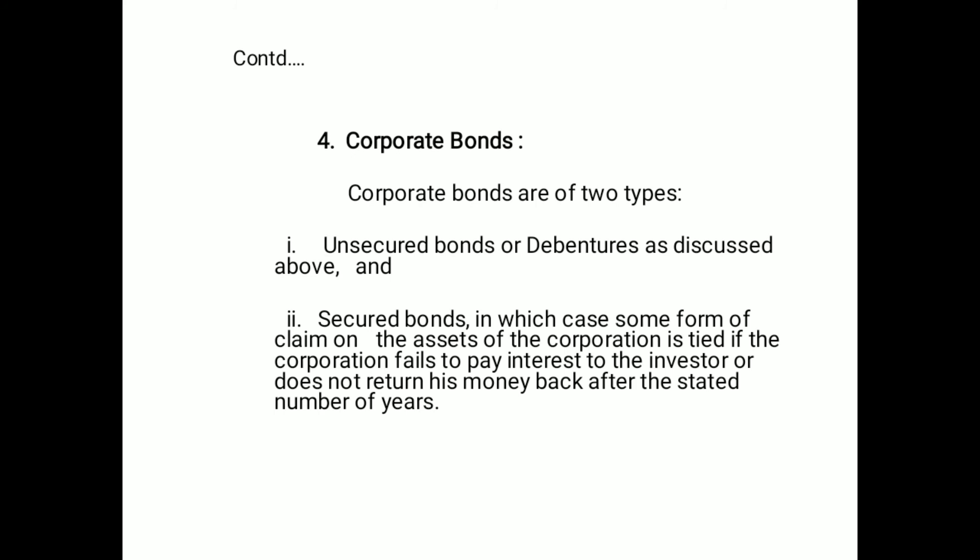The fifth source is corporate bonds. Corporate bonds are of two types: unsecured bonds or debentures as discussed above, and secured bonds, in which some form of claim on the assets of the corporation is established if the corporation fails to pay interest to the investor or does not return the money after the stated number of years.